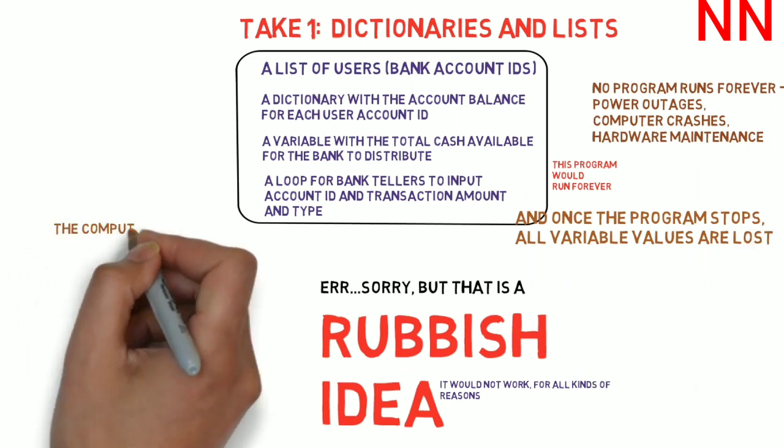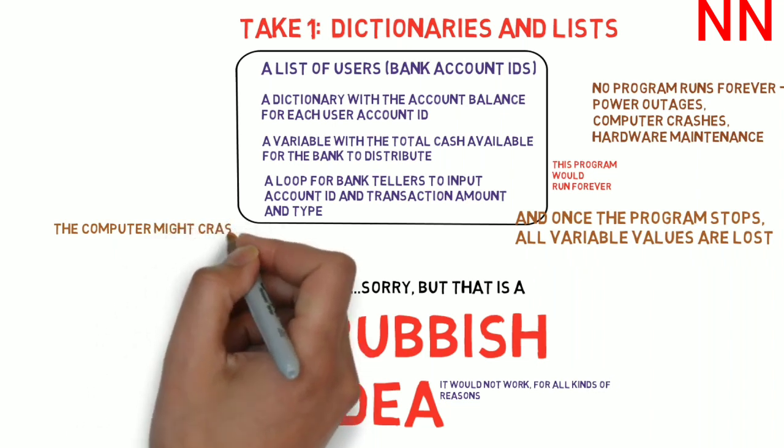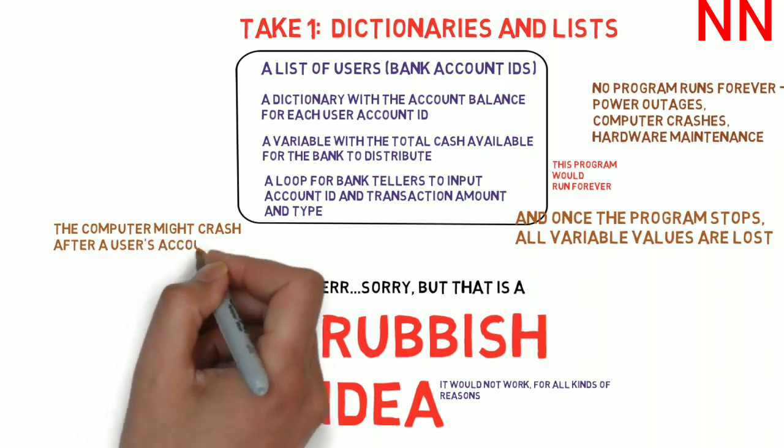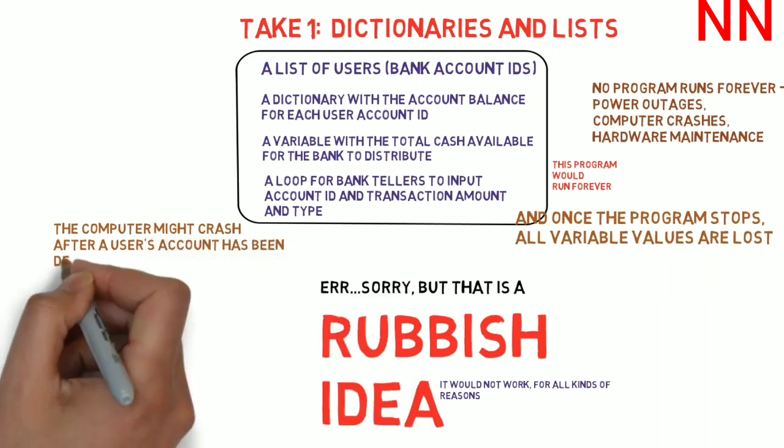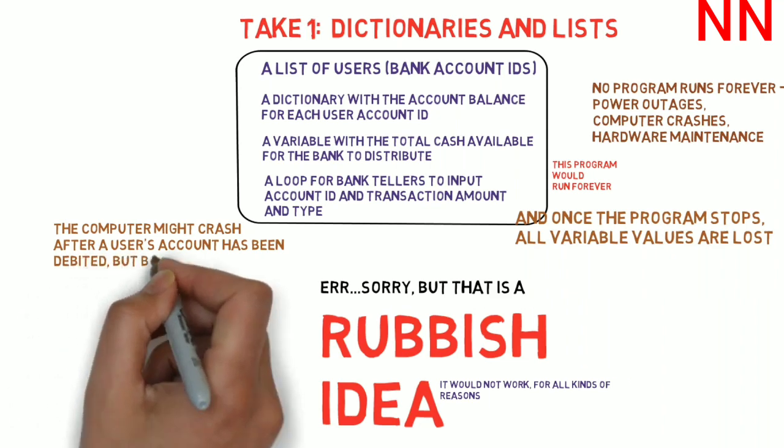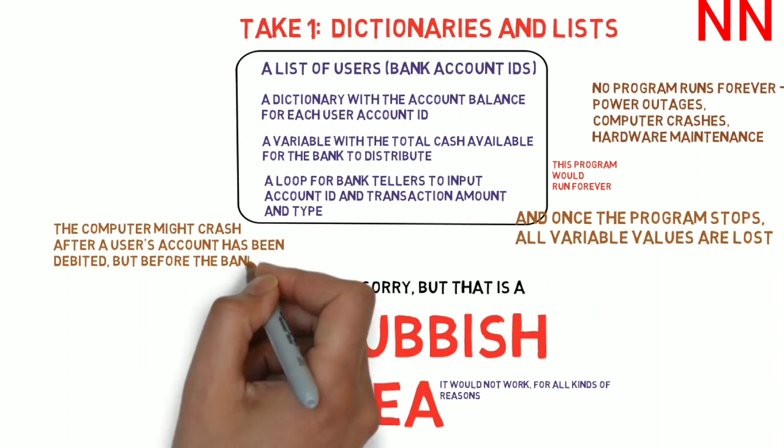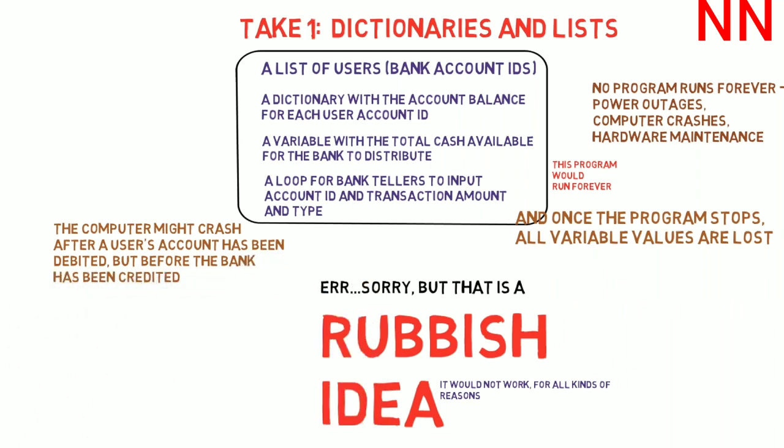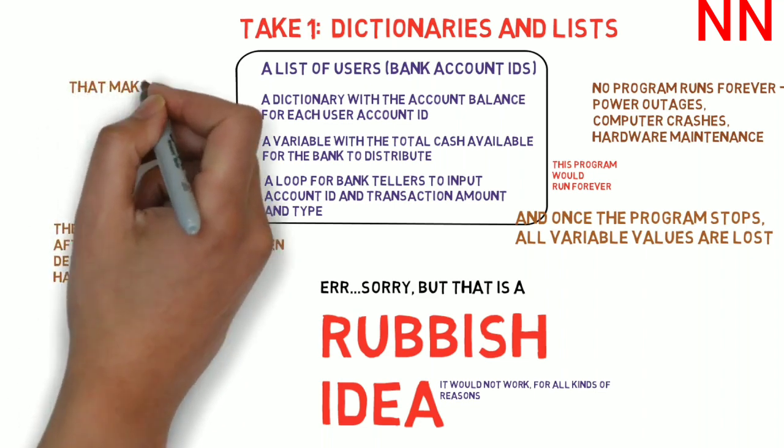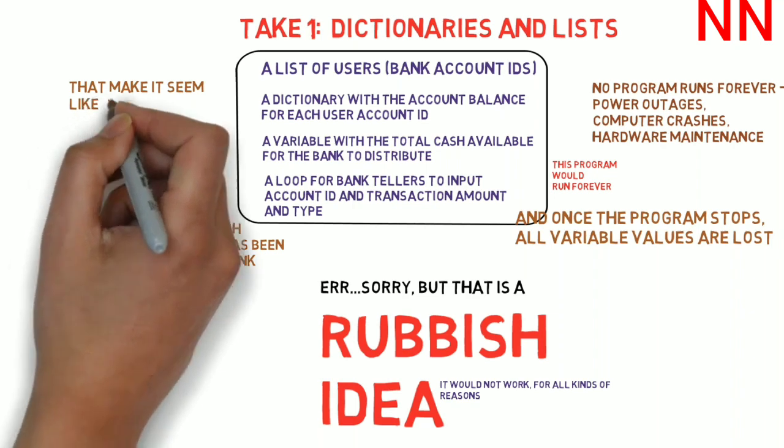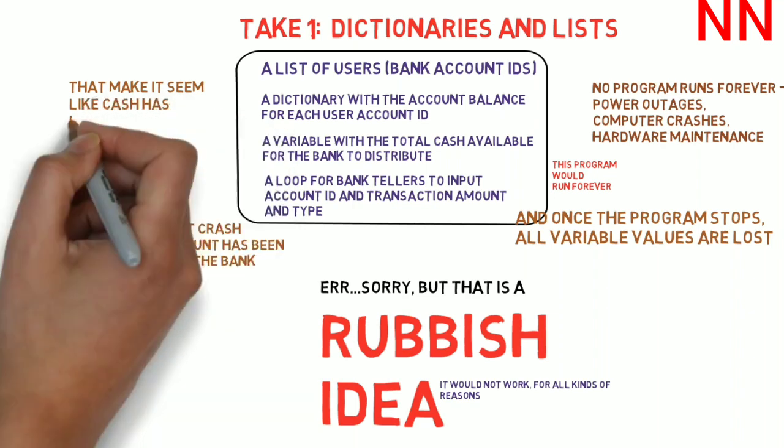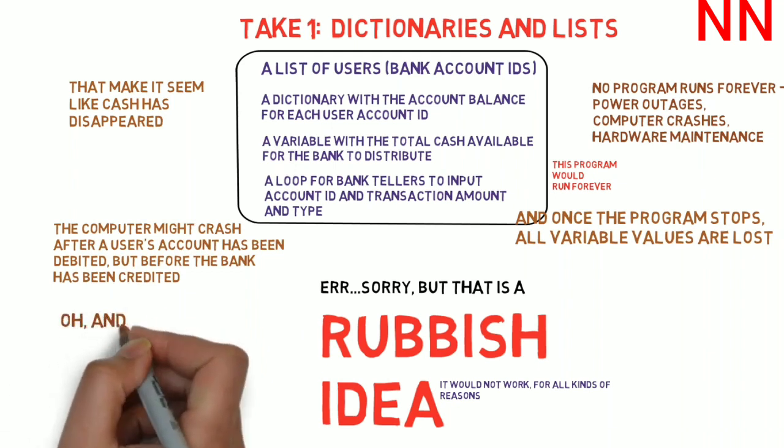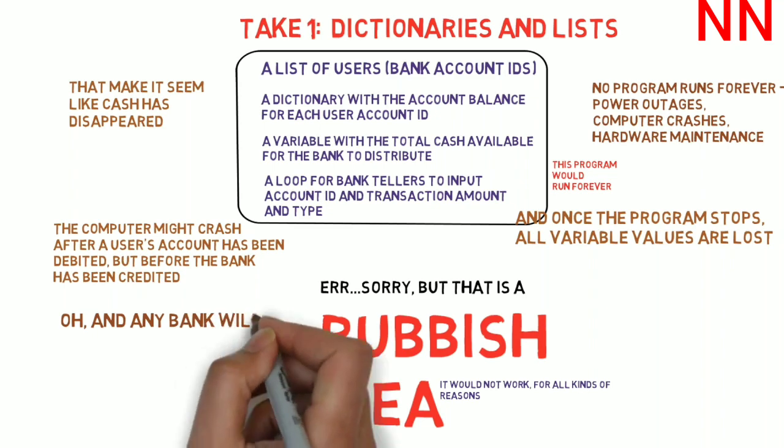Now, even if there was some way for the variable values to be stored and accessed when a computer crashes, what if the computer crashed after a user's account has been debited, but the variable for the bank has not, cash value has not been credited. So, it makes it seem suddenly like cash has appeared or disappeared from nowhere. That's just a rubbish way to run a bank ATM. If any bank ATM really worked like that, there would be all kinds of people trying to game it.